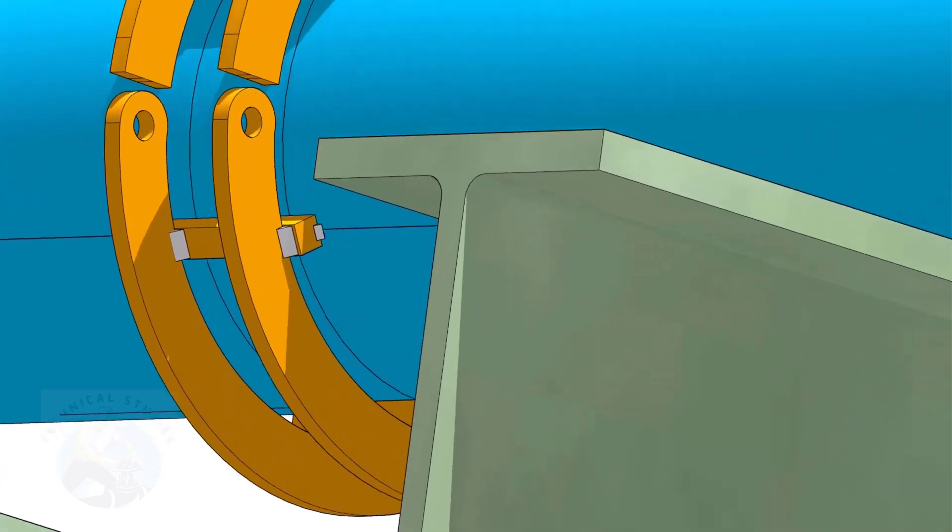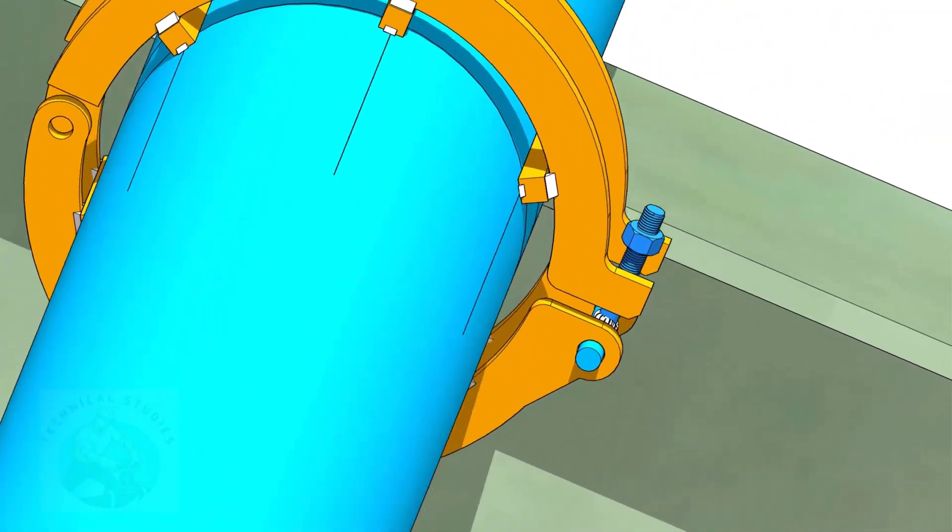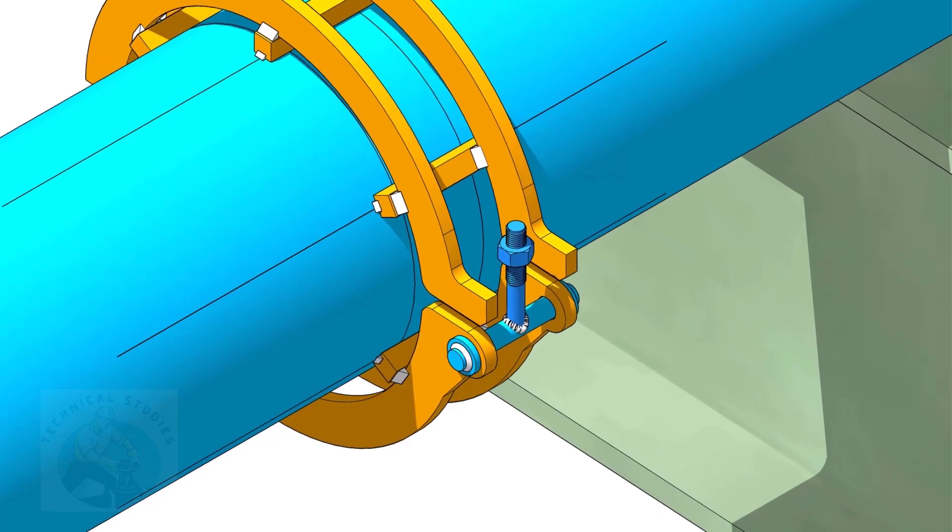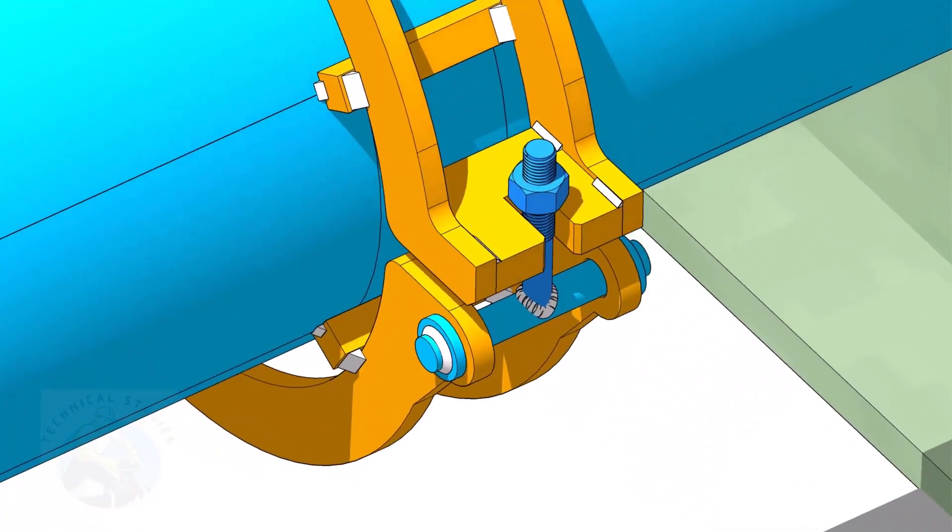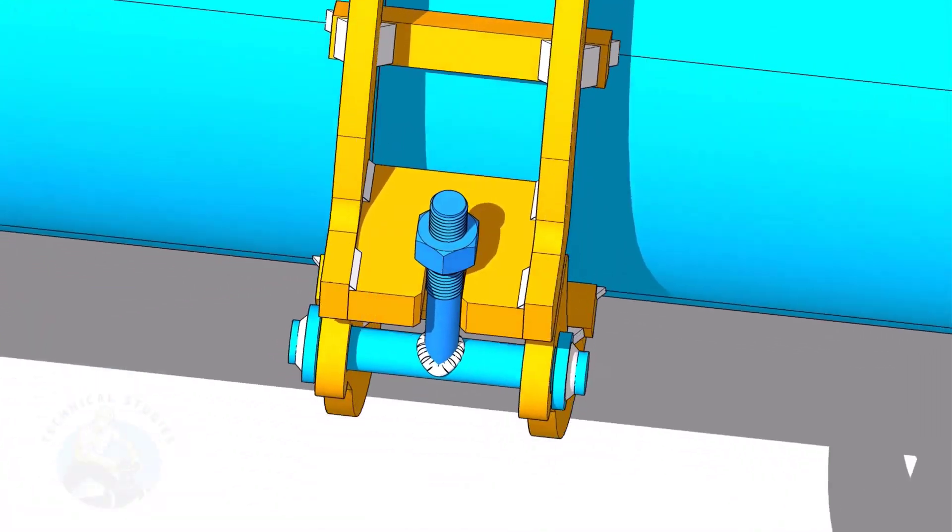First, put the bolt and the hinge plates, and tack weld the hinge plates with the top rings. Tack weld the slotted plate with the top rings as shown.